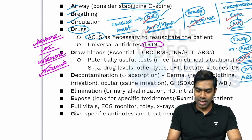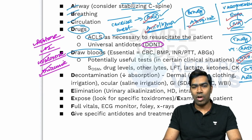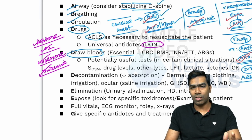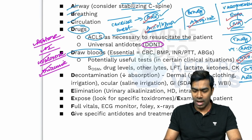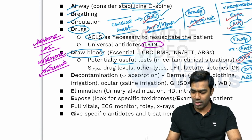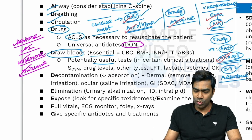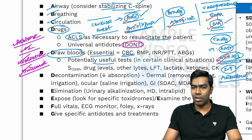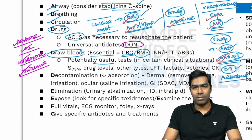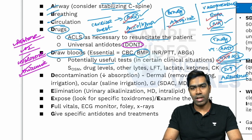The second D is all about drawing bloods. We can split blood investigations into essential investigations in the setting of toxicology and potentially useful investigations done only in selected clinical situations. Essential blood tests include a full blood count — that is, a complete blood count — and a basic metabolic panel.